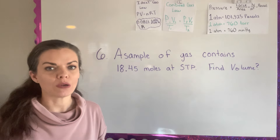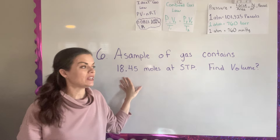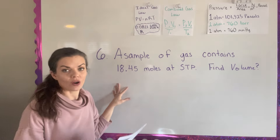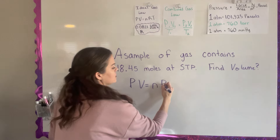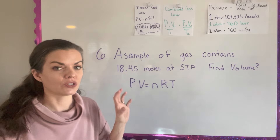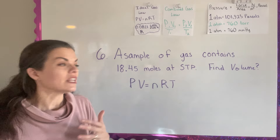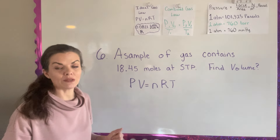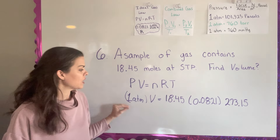Number six tells us that a sample of gas contains 18.45 moles at STP, and it's asking us to find the volume, so I'm going to use the ideal gas law: PV equals NRT. I'm looking for the volume, and the pressure is actually hidden in that STP — we're going to use one atmosphere for the pressure.